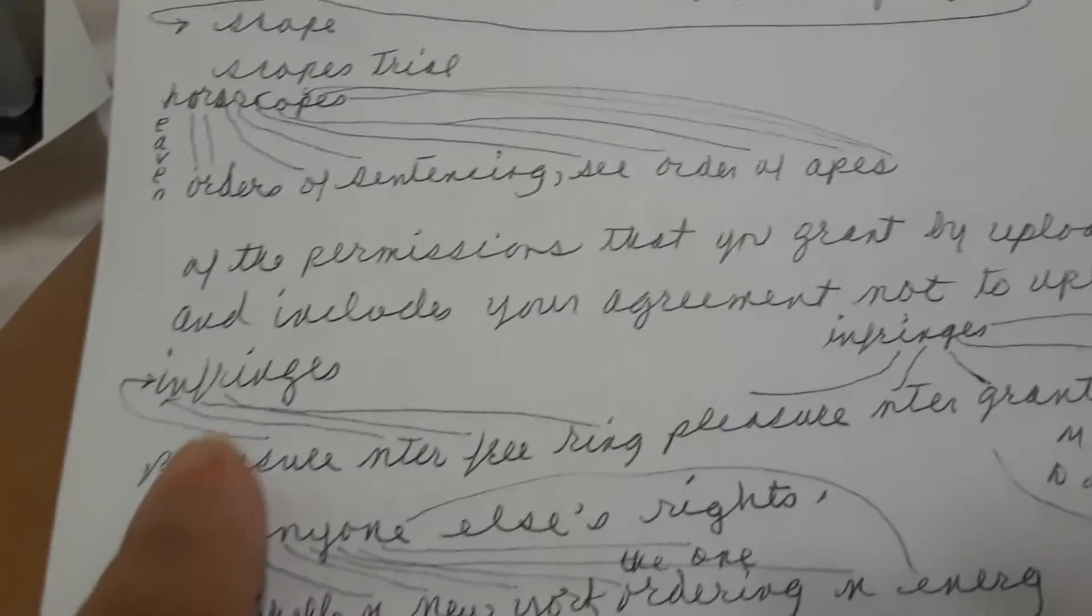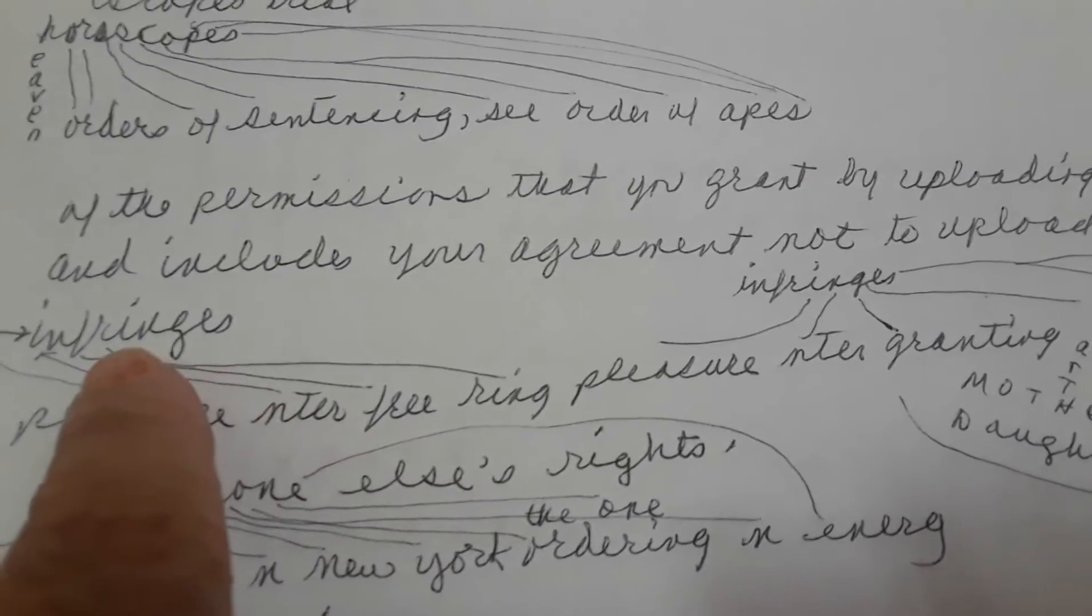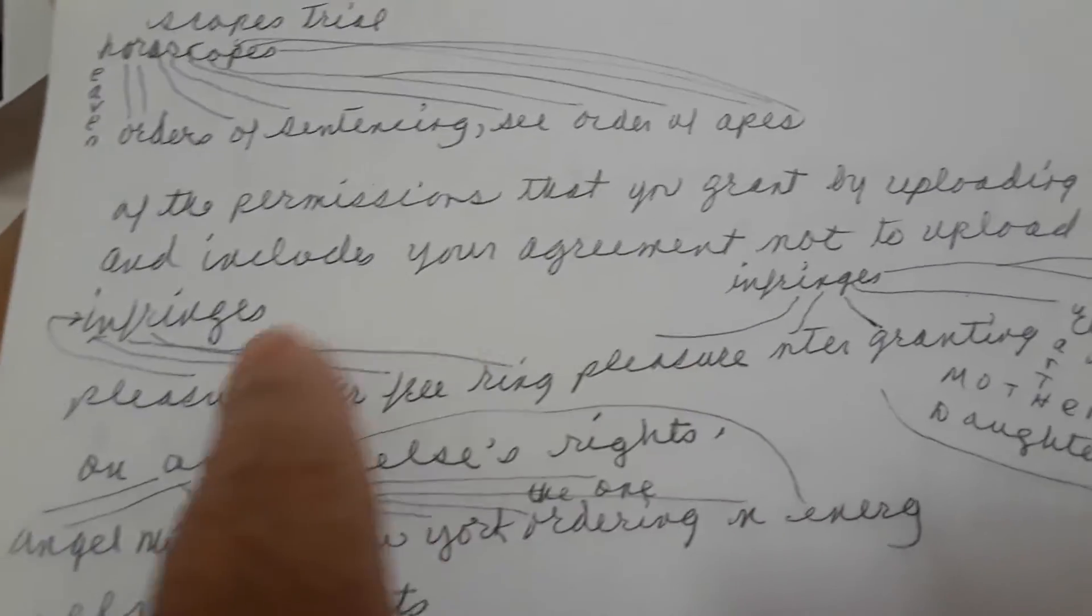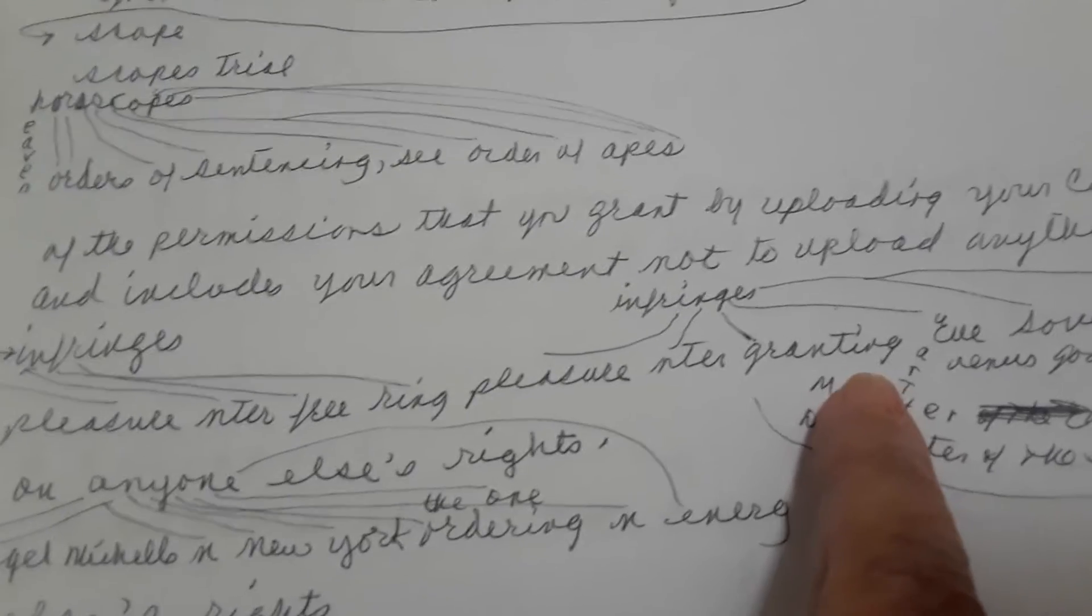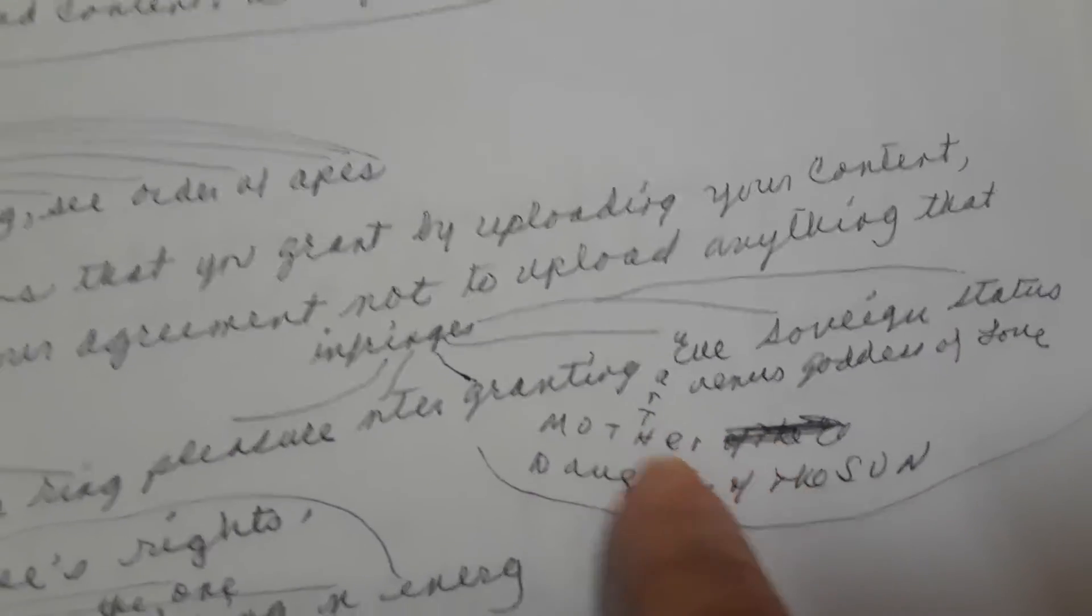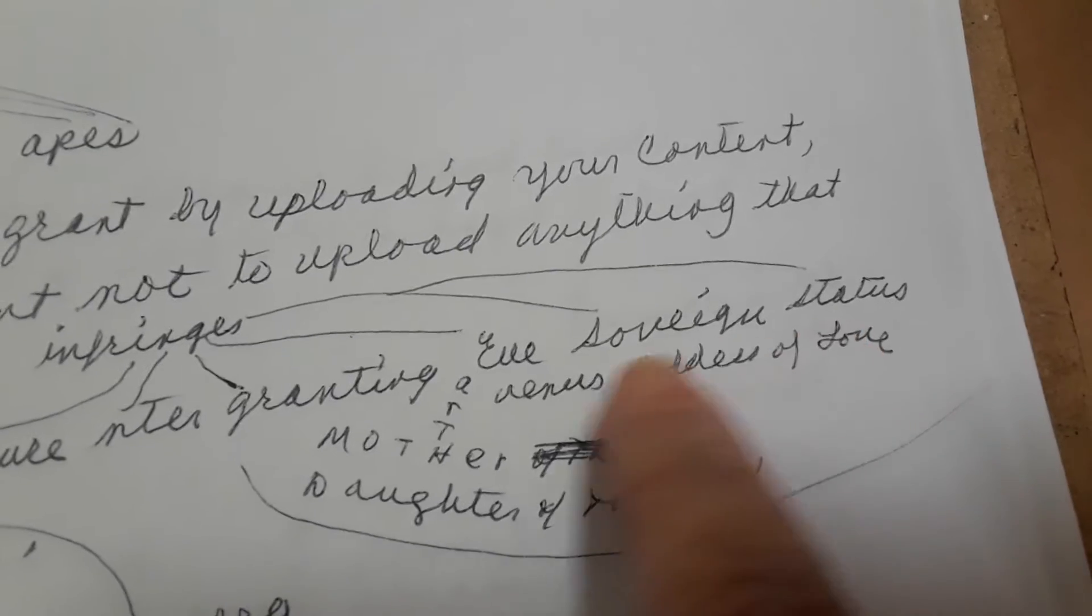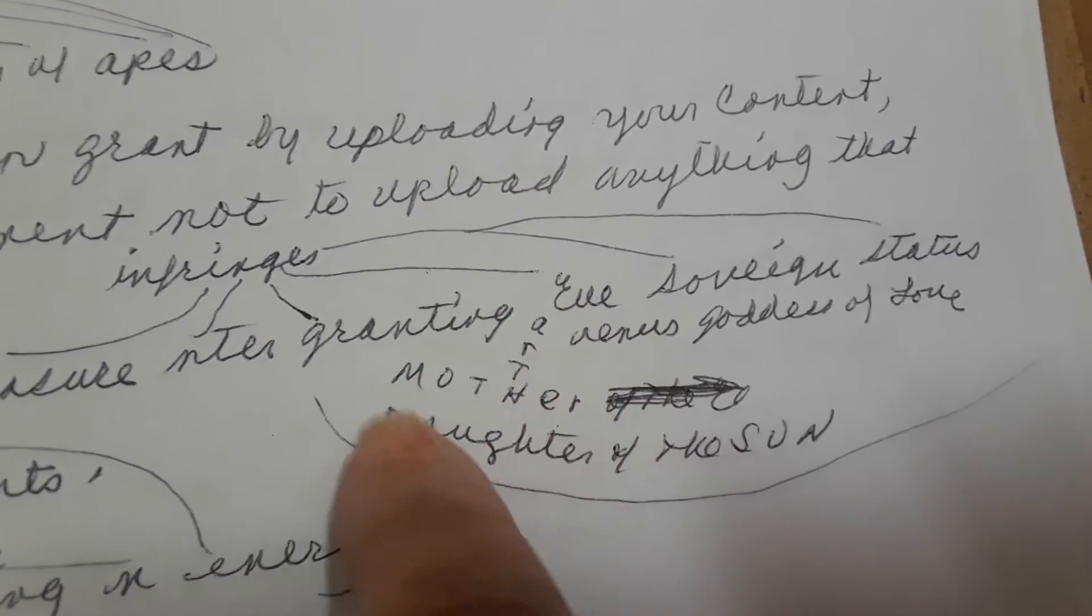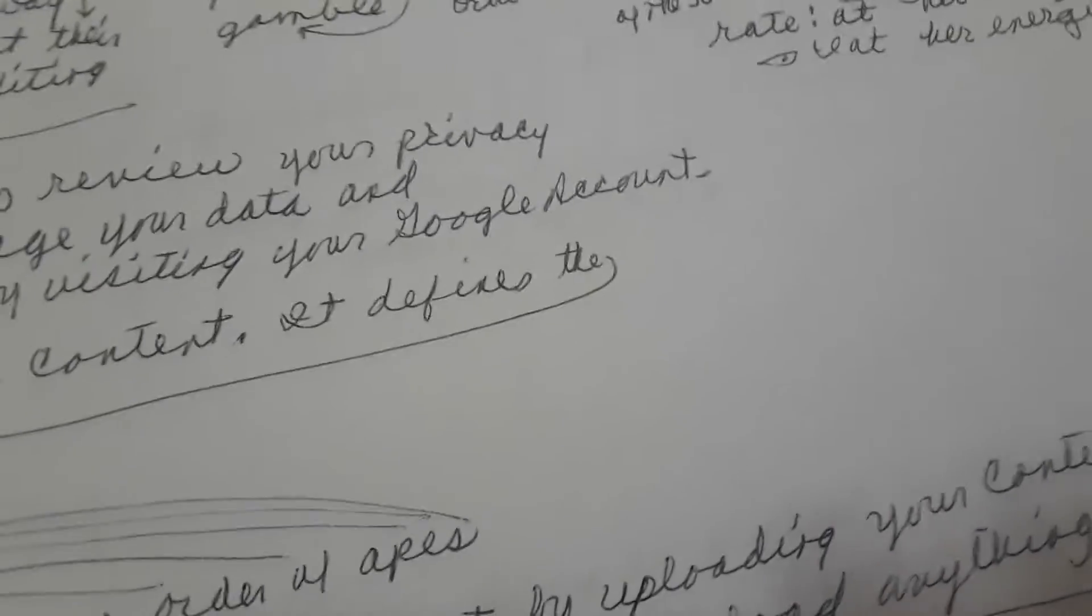It defines the scope of the permissions that you grant by uploading your content and includes your agreement not to upload anything that infringes on anyone else's rights. What words do we find in the word infringes? I for pleasure, N for enter, F-R for free, ring for ring, I for pleasure, N for enter, G for granting, E for Eve, and S for sovereign. Pleasure enter, free ring pleasure, enter granting, Eve, Earth's mother, daughter of the sun, sovereign status. Venus, goddess of love. Eve is a sovereign.